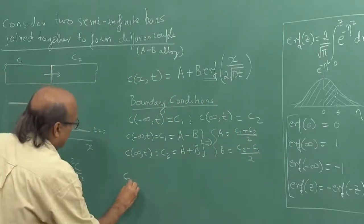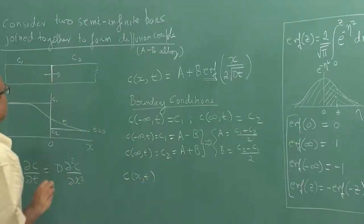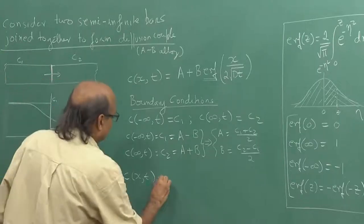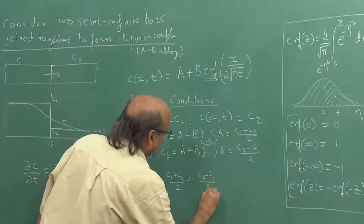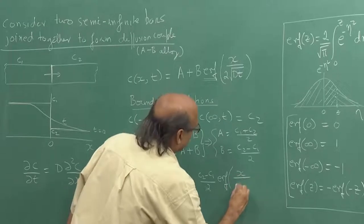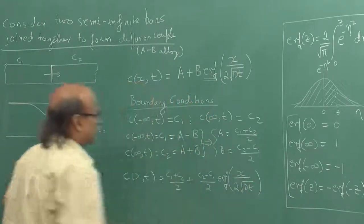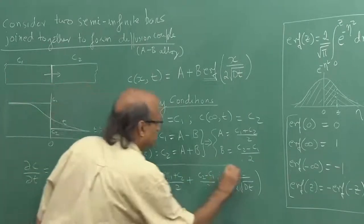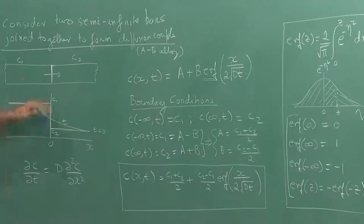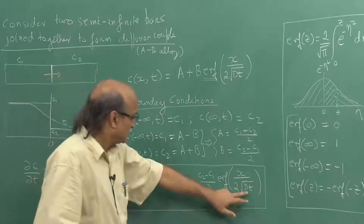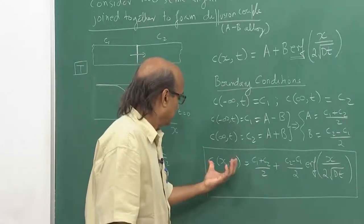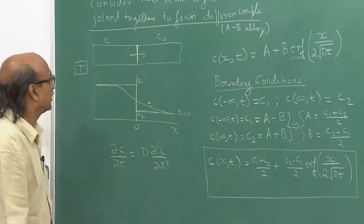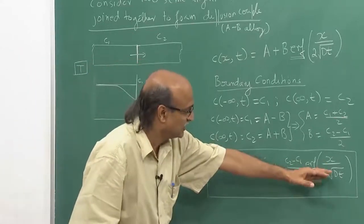Hence the concentration profile of B atoms in this diffusion couple is given by C(x,t) = (C1 + C2)/2 + (C2 − C1)/2 · erf(x / 2√(Dt)). This gives the solution of how the concentration is going to change in a diffusion couple. If we know the diffusion coefficient at the temperature being studied, we can predict how the solute B atom concentration changes at different locations x and at different times.